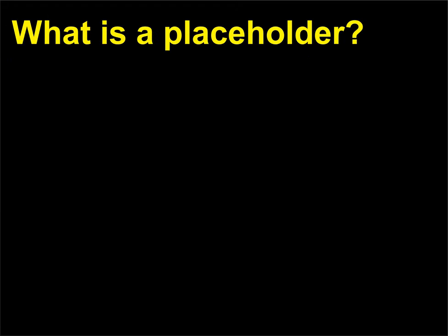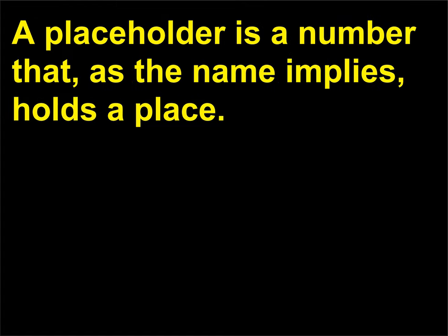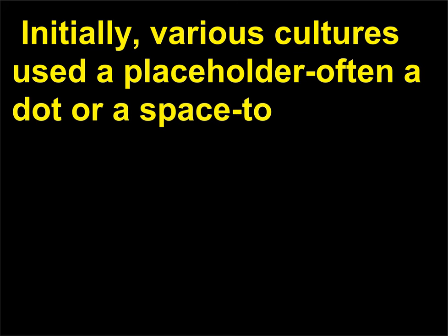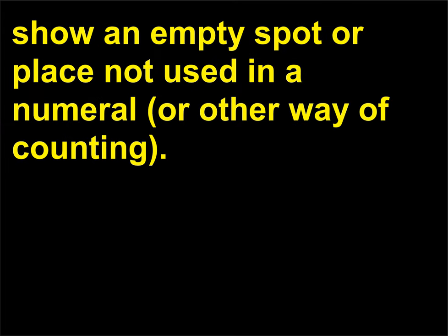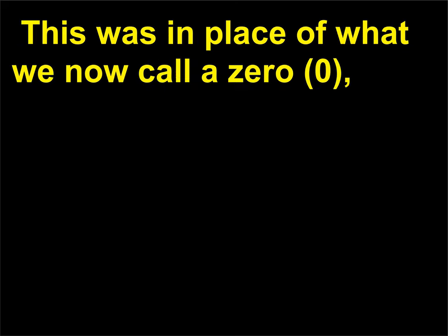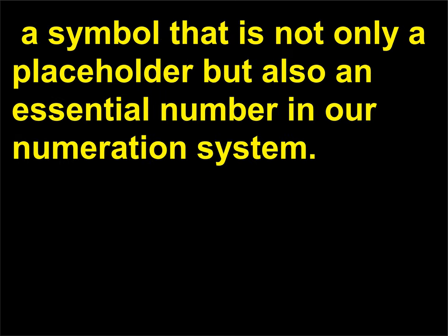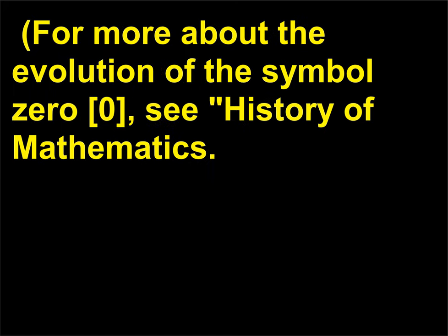What is a placeholder? A placeholder is a number that, as the name implies, holds a place. Initially, various cultures used a placeholder — often a dot or a space — to show an empty spot or place not used in a numeral or other way of counting. This was in place of what we now call a zero: a symbol that is not only a placeholder but also an essential number in our numeration system. For more about the evolution of the symbol zero, see History of Mathematics.